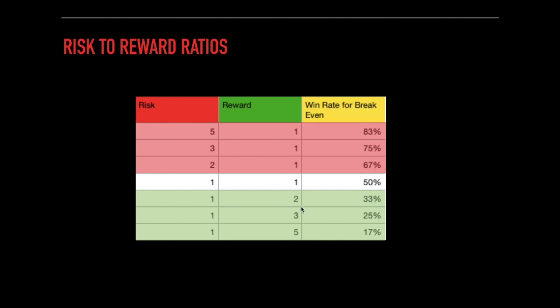Instead, let's say on each trade you plan to risk $100 to make $200. This is called a risk-to-reward ratio of one to two. With a one-to-two ratio, you only have to be right 33% of the time to break even. And if you have the knowledge, experience, and a proven strategy, you should have a win rate higher than 33%. Even if you're right only 50% of the time, you're still going to be profitable.